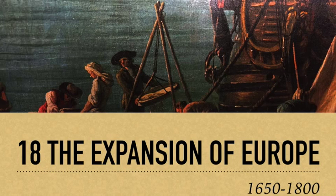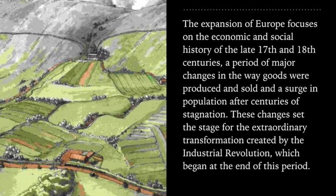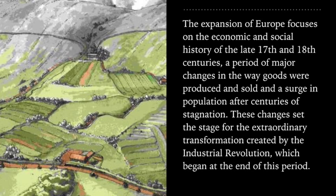Overall, the key to understanding this chapter is: change from what to what? This first segment is specifically about agriculture. The chapter overview says the Expansion of Europe focuses on the economic and social history of the late 17th and 18th centuries — a period of major changes in the way goods were produced and sold, and a surge in population after centuries of stagnation. These changes set the stage for the extraordinary transformation of the Industrial Revolution, which begins at the end of this period.